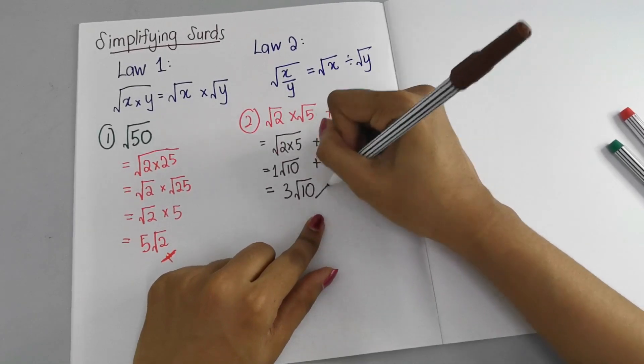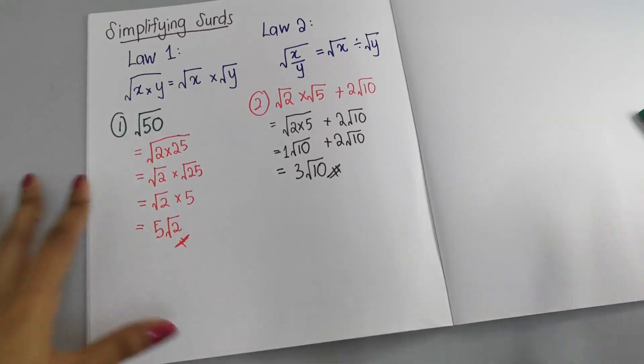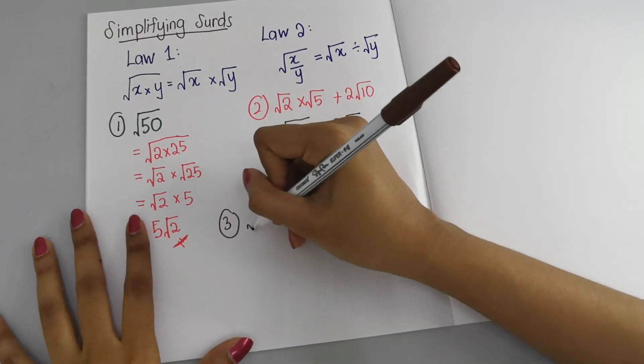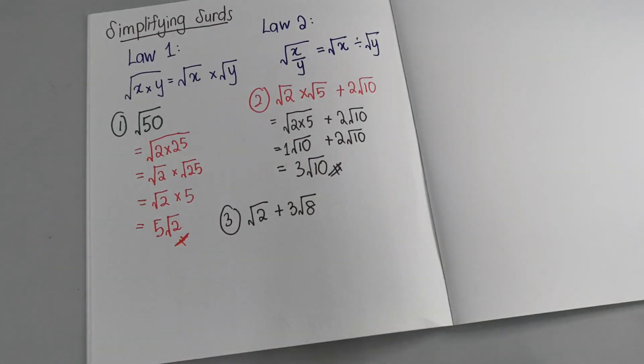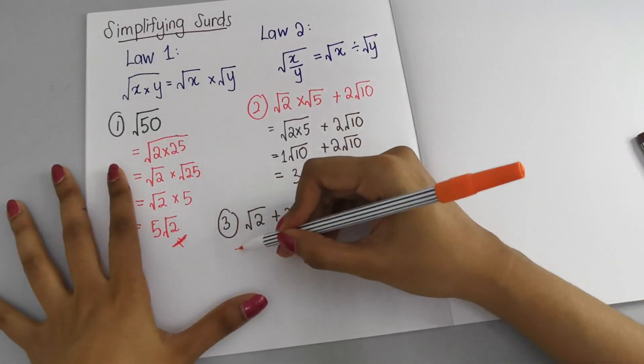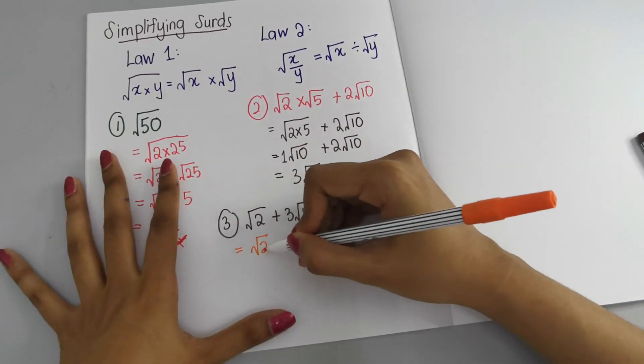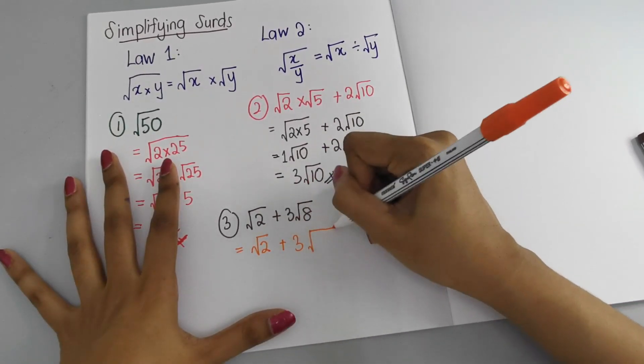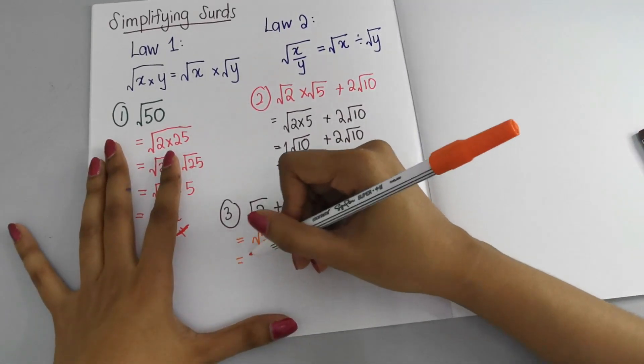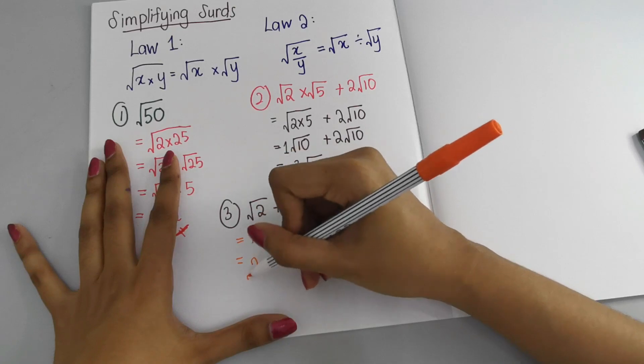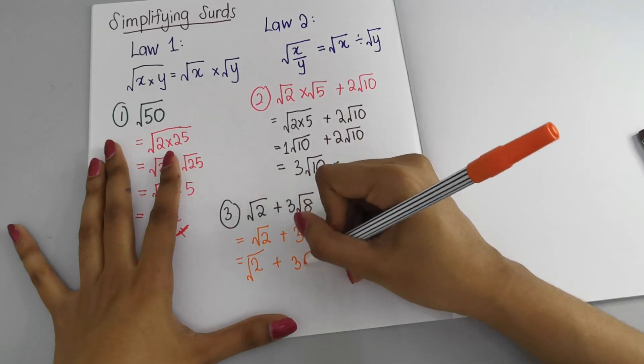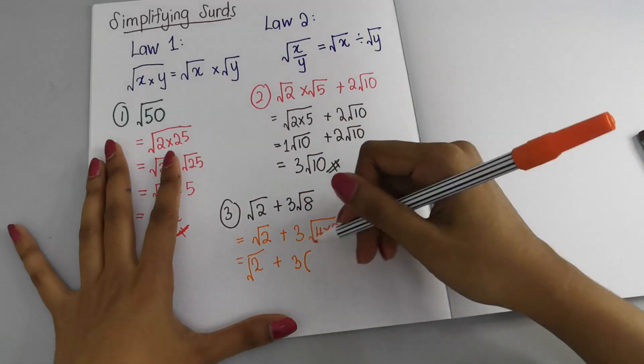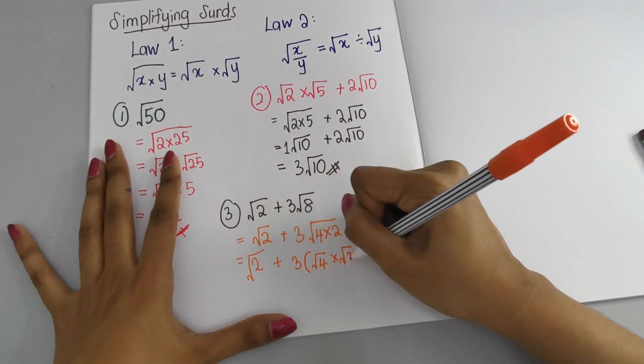Now the third one: √2 + 3√8. Here we have √2 and √8. √2 we can't do anything, so I'm just going to write √2 back plus √8. √8 I can write as 4 × 2. So it's going to be √2 + 3√(4×2). I'm going to put a bracket first and separate them.